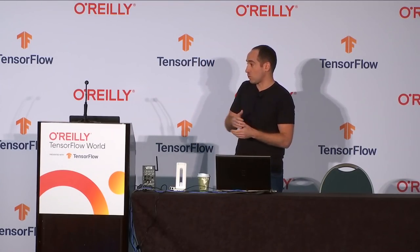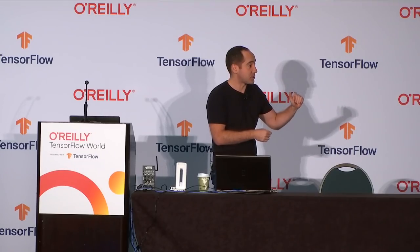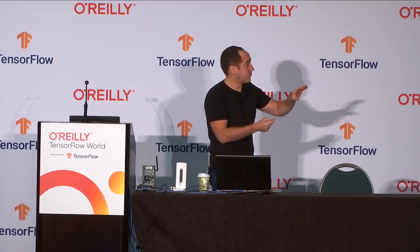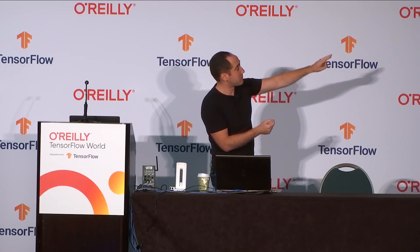The @tf.function annotation is optional — your code will work the same without it. But if you want a graph in TensorFlow 2 or want to compile your code to run faster, you can add that annotation. TensorFlow 2 will trace your computation, compile it, and on the second and subsequent runs, it will execute much faster because it's running entirely in C++. That's all there is to graphs in TensorFlow 2 — it's easy performance if you need it.